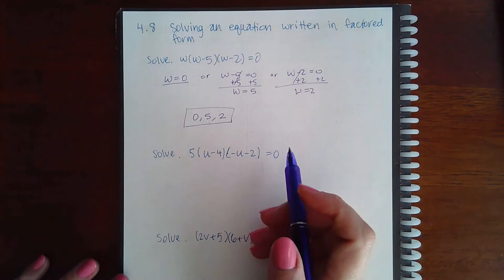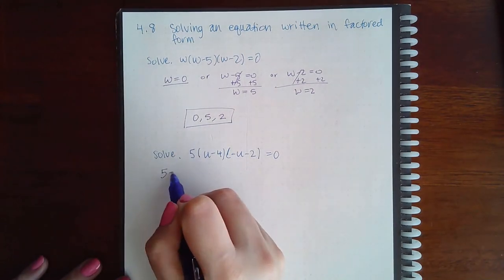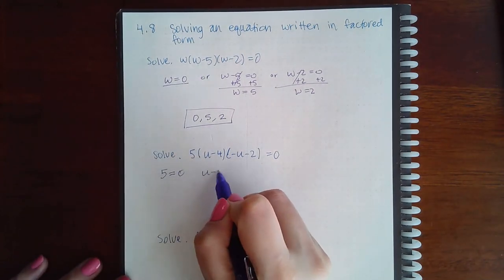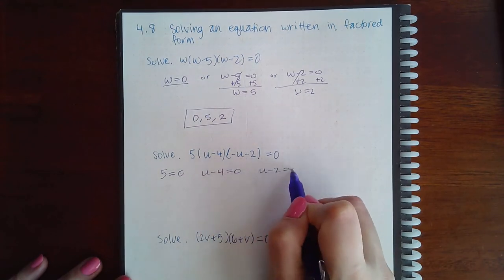Similarly with this one, you would set each factor equal to zero. I would set 5 equal to zero, u minus 4 equal to zero, and u minus 2 equal to zero.